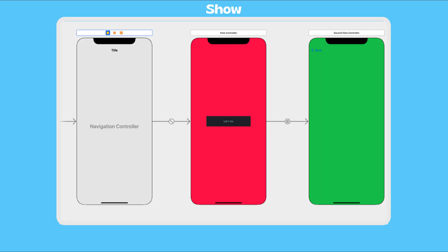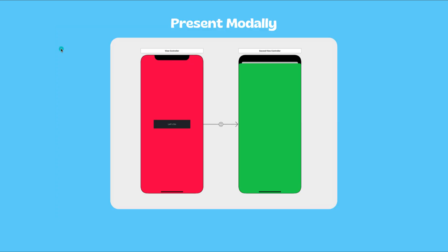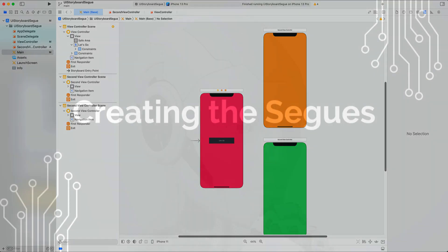To create a Show segue, the parent view controller needs to be embedded in a Navigation Controller. The Navigation Controller provides a navigation bar — once the destination view controller is presented, the navigation bar appears automatically on top. In a Present Modally segue, the destination view controller appears on top of the original one, but you have options for how to present it. By default it comes in a card form where you can drag it down to dismiss. Another option is Full Screen, where the destination view controller covers the entire screen.